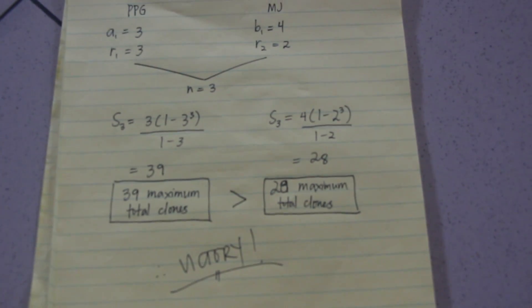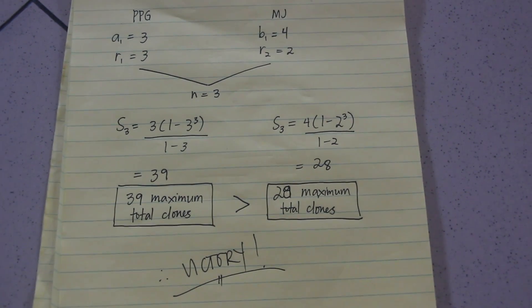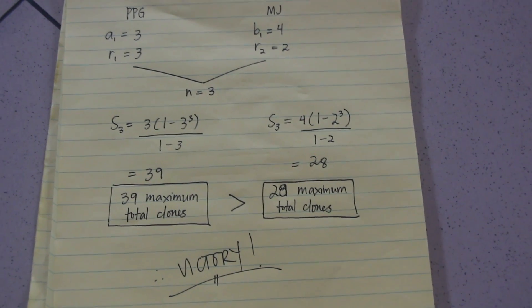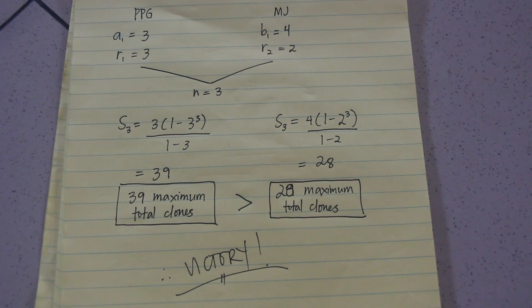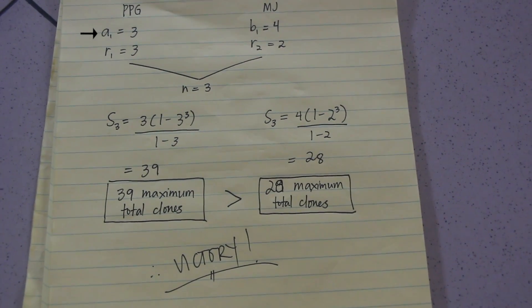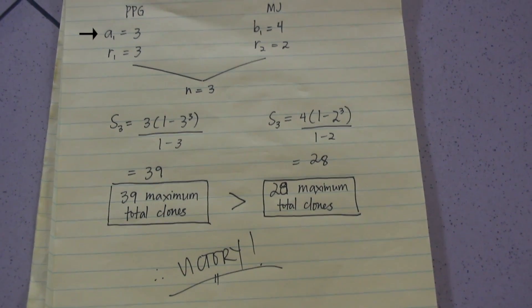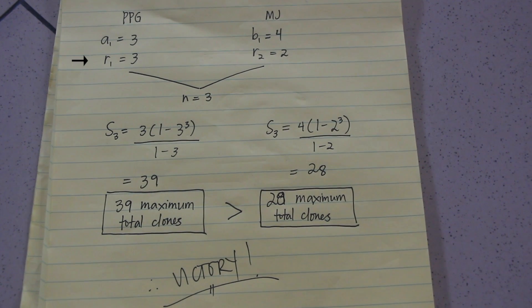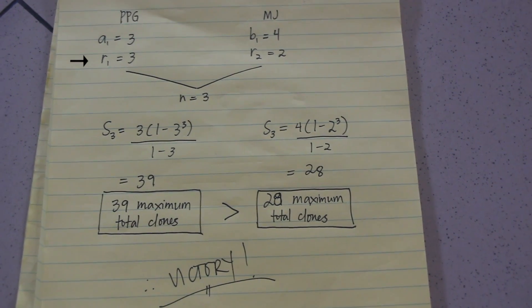We also know that the maximum of 3 times of cloning is possible for super beings on this human world. We can represent the situation in a geometric series. We can let A sub 1 be the first term of our side. That is, the initial number of clones. In this case, A sub 1 is 3. Next, we let R sub 1 be the common ratio of our side. That is, the rate of our cloning power. In this case, R sub 1 is 3.